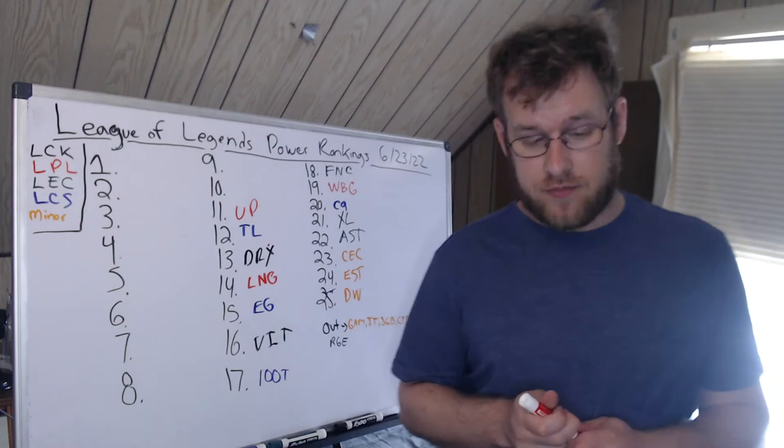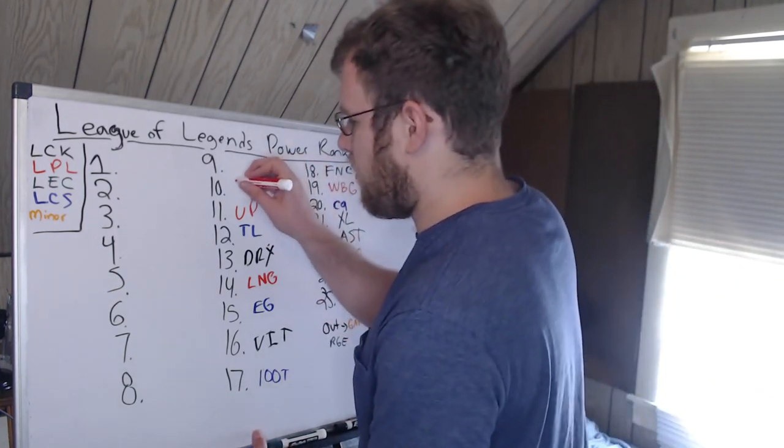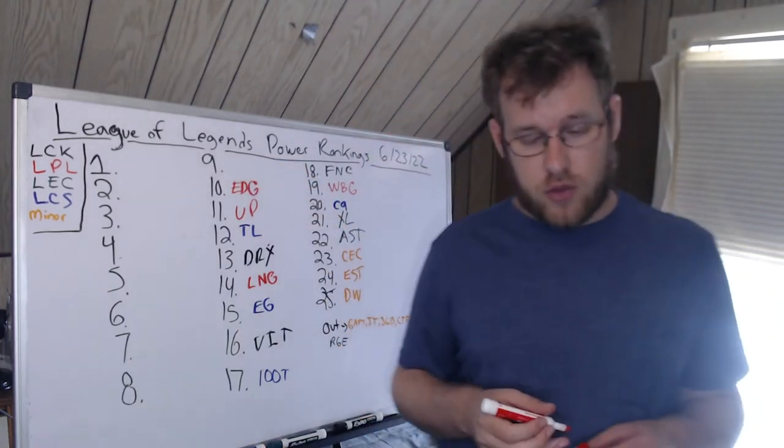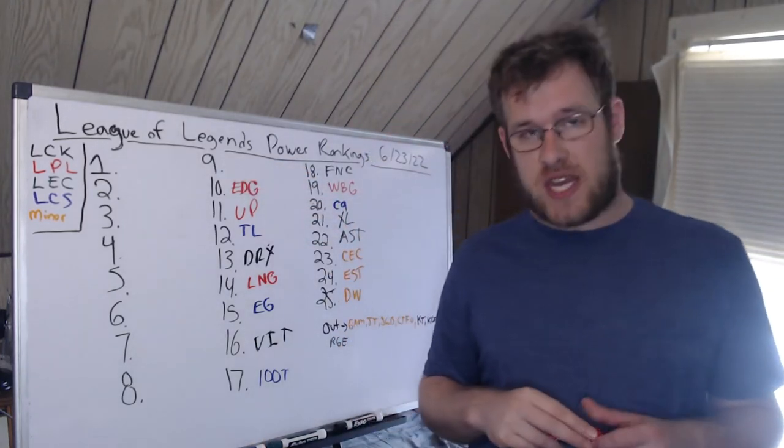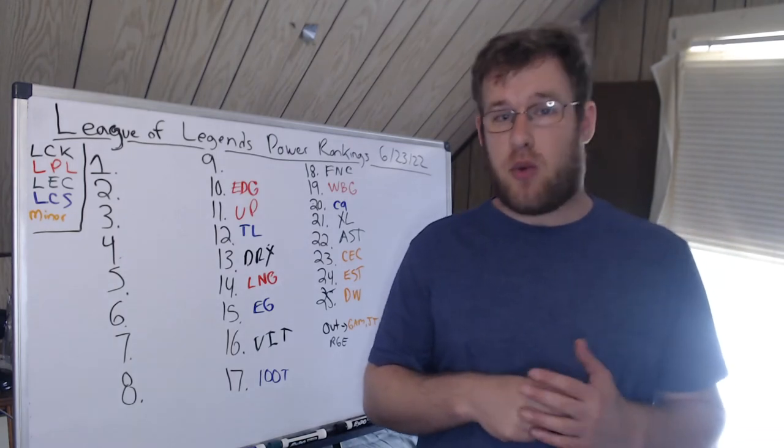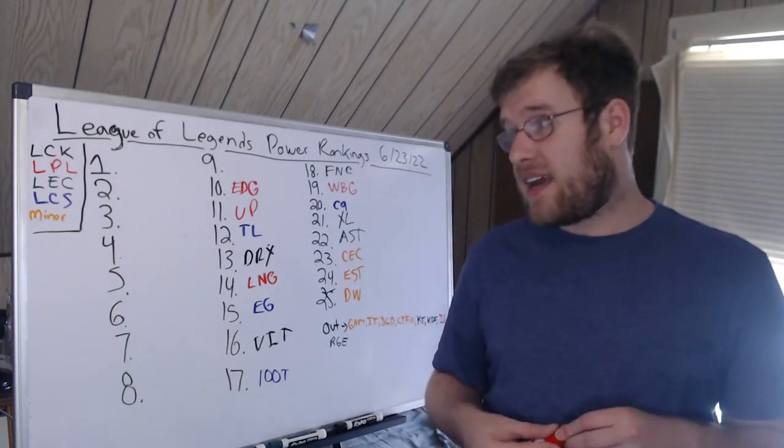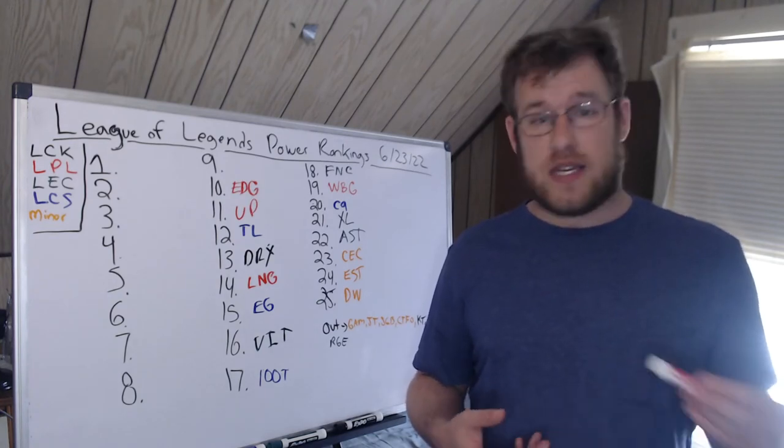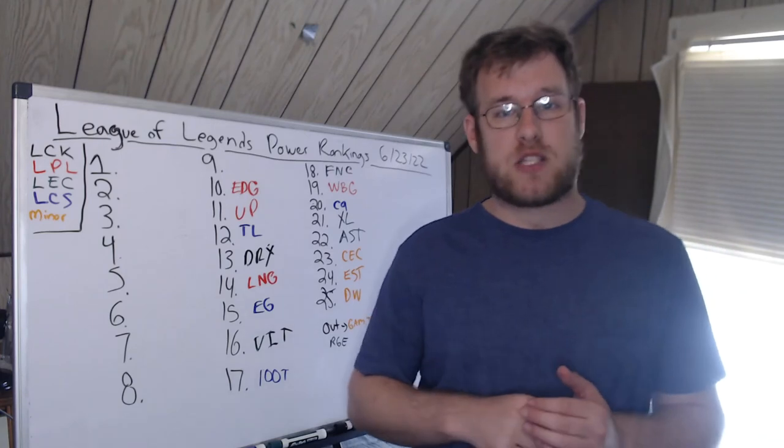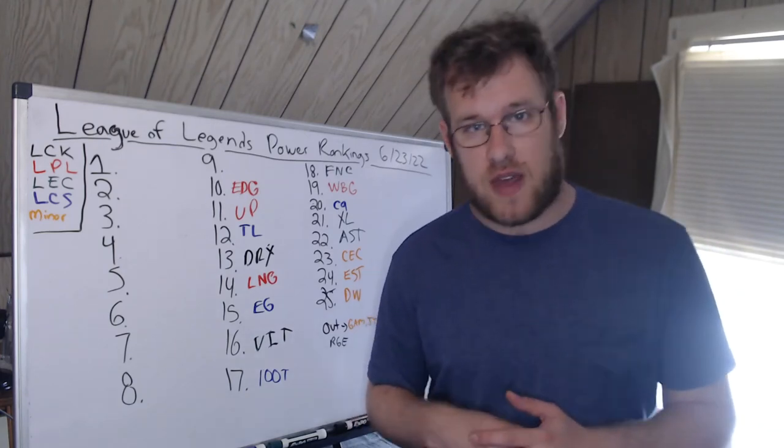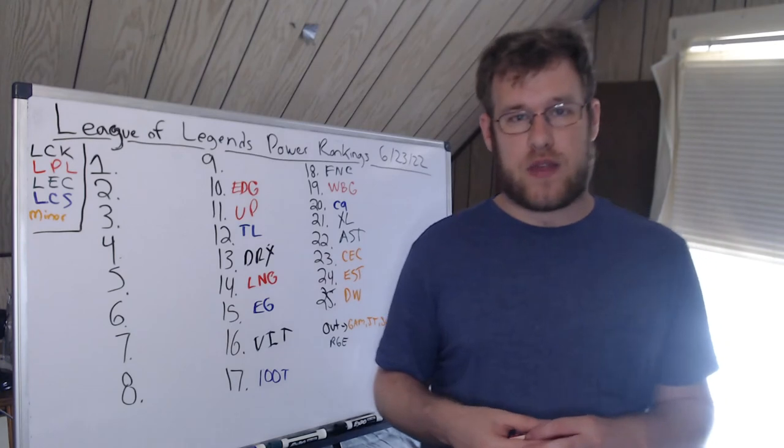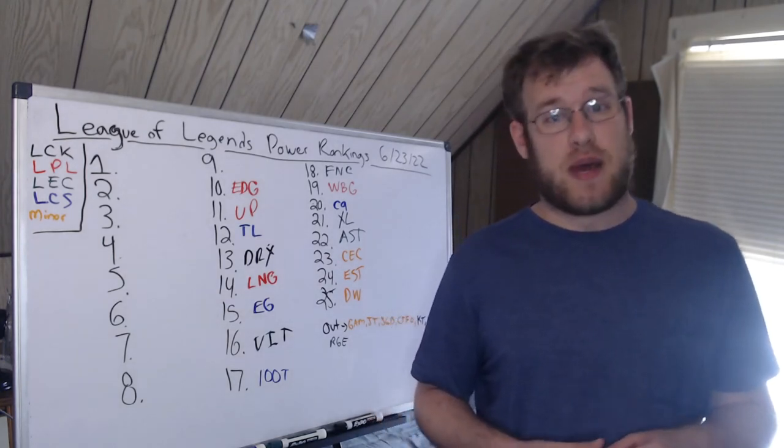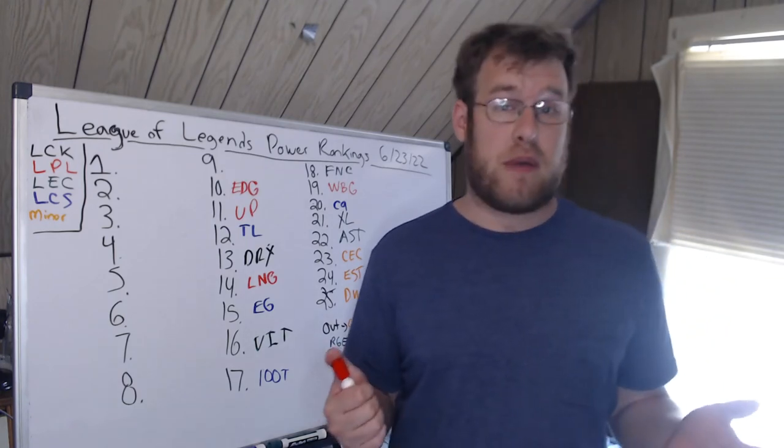10th, we have EDG, the defending world champions. EDG have struggled. They're 3-1, but they lost to JDG this past week. It went to three games against IG. They are not as good as we thought they would be in summer. In spring, at first they were okay, but once they hit a wall mid-spring, they fell off a cliff and they never really recovered. As of right now, I don't think they've recovered.